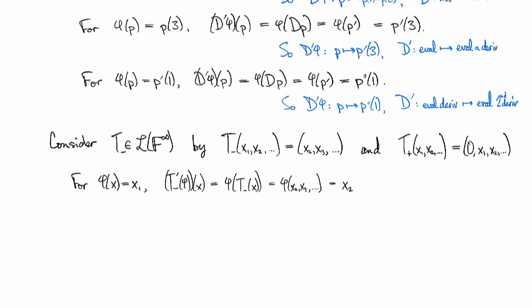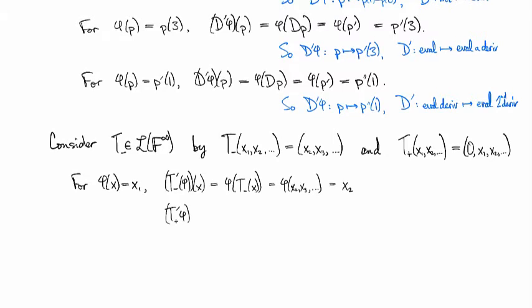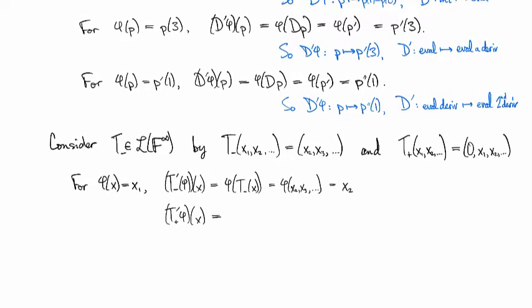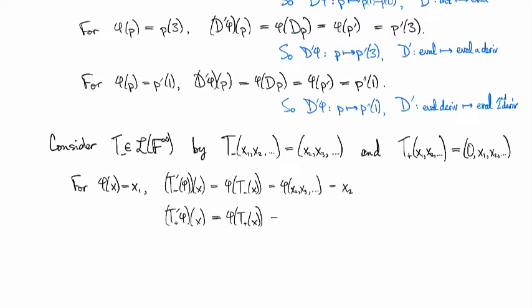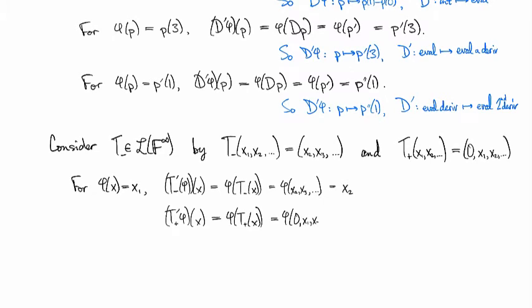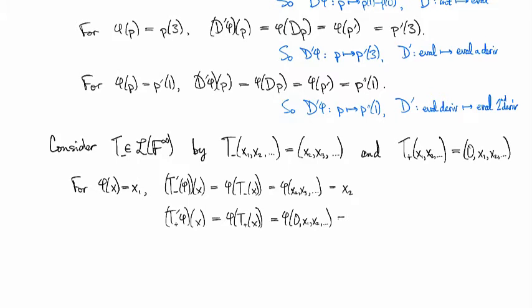If we looked at what happens with T plus prime, what do we have there? So this is going to be phi of T plus x, which is phi of something beginning with zero. And since phi pulls off its first coordinate, we just get zero.